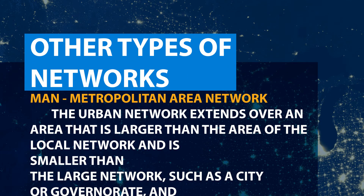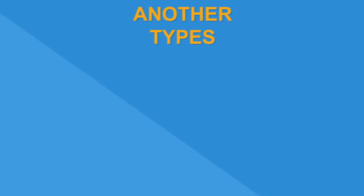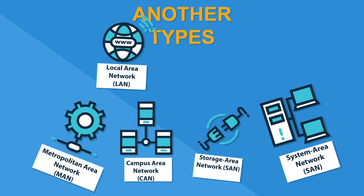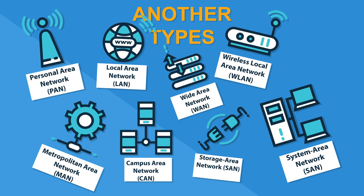Finally, there are other types of networks. MAN, metropolitan area network: the urban network extends over an area that is larger than a local network but smaller than a wide area network, such as a city or government area, and it is usually owned by a government body or a large company. There are other less common types of network such as the controller area network CAN and the personal area network PAN.